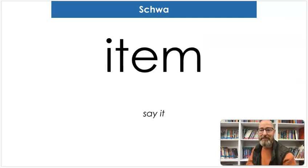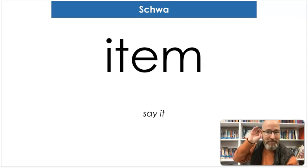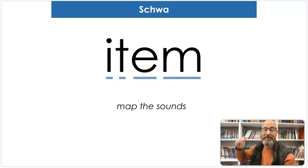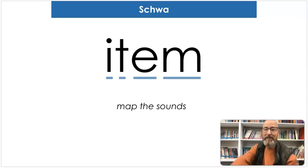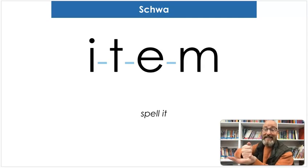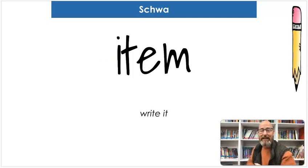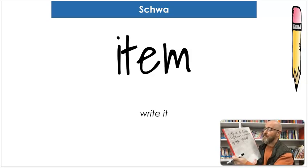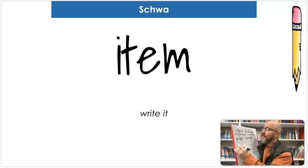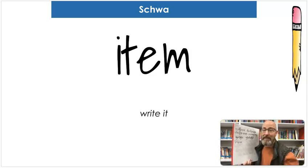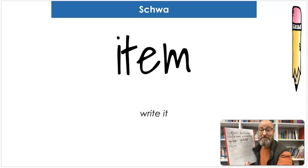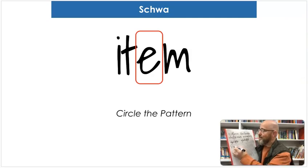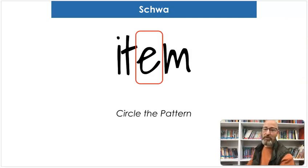Our next word is 'item.' Say item. Map the sounds: I-T-I-M. Item. Spell it: I-T-E-M. Item. And let's write it: I-T-E-M. Where's the schwa? In the E — that's right. It says 'ih' — the short I sound.